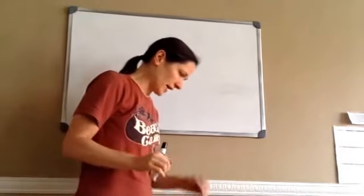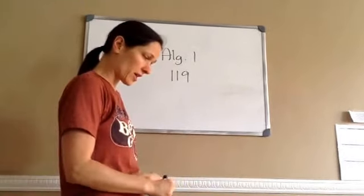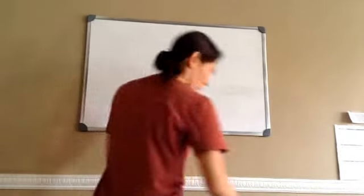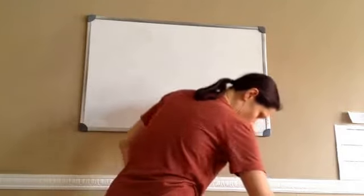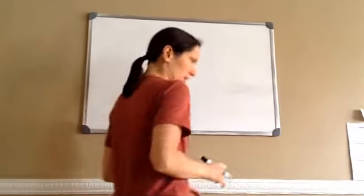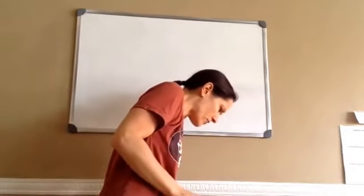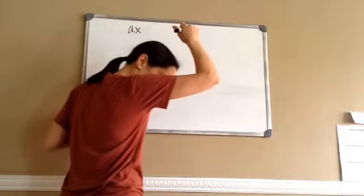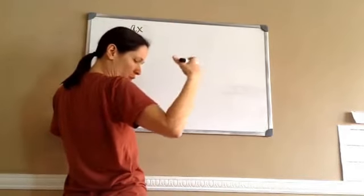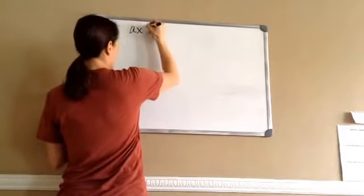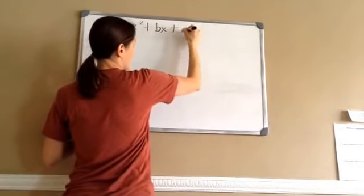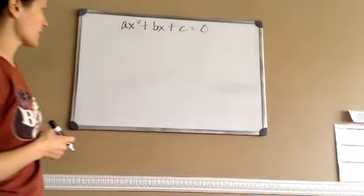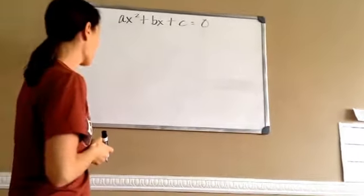Algebra 1, Lesson 119. This is on the quadratic formula and the use of the quadratic formula. Before we start, I want to write down a few things you kind of learned in Lesson 117 or 118. This is the normal form of the quadratic equation: AX squared plus BX plus C equals 0. You need to know that that's the general formula for a quadratic equation.